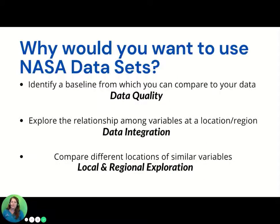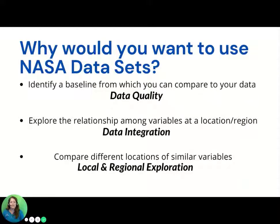Researchers may ask: why would I wish to use NASA data sets rather than focusing solely on GLOBE data? The answer includes, but is not limited to, the following rationale. When researchers compare GLOBE data to NASA and other agency professionally collected data, they are afforded opportunities to identify a baseline to compare their GLOBE data to. They may also identify how closely aligned their observations are to NASA sensors. In these ways, the researcher may use NASA data to promote their data quality efforts. Including these data in your GLOBE research also offers the opportunity to explore relationships among science variables for a particular location or region, supporting the researcher's efforts of data integration.